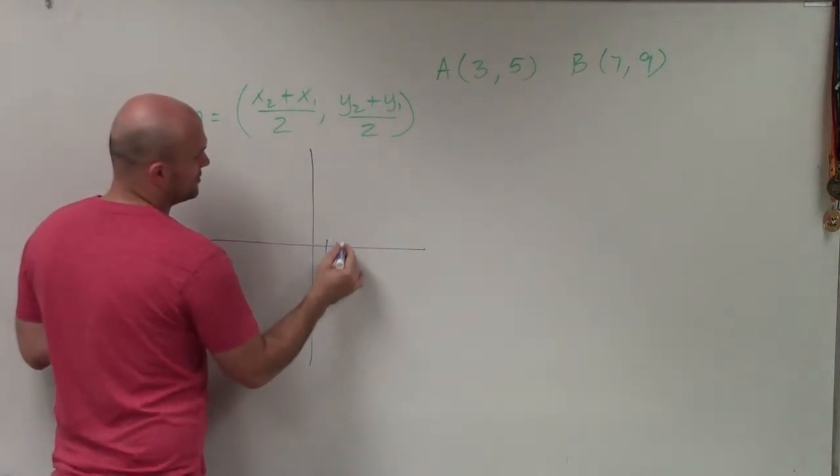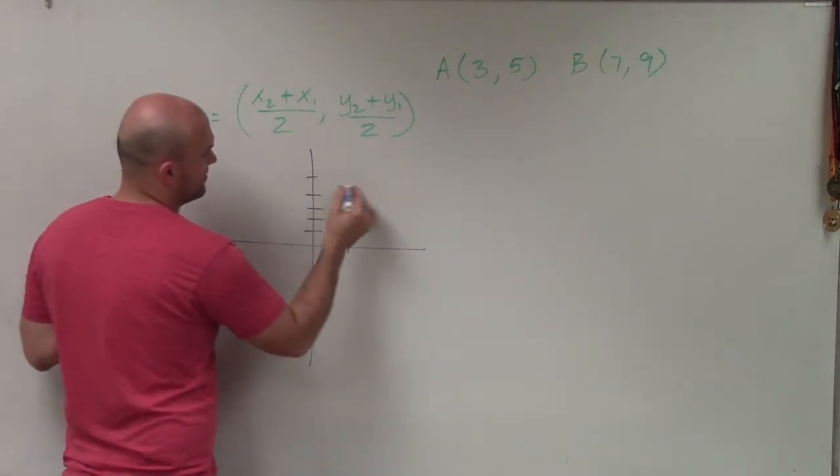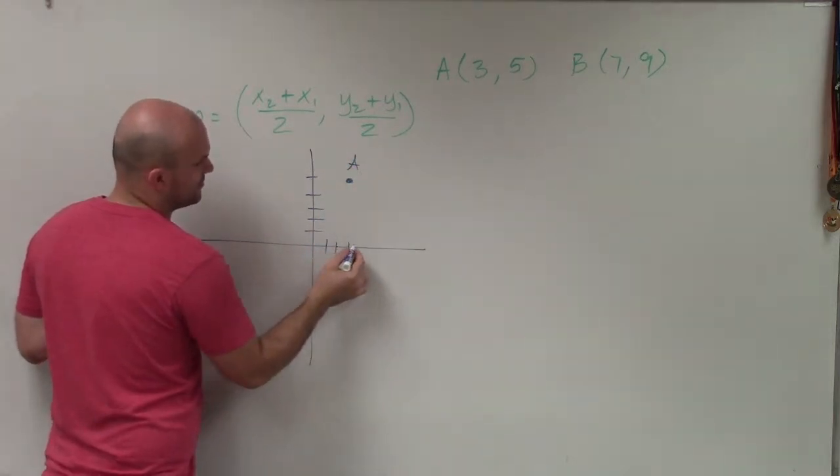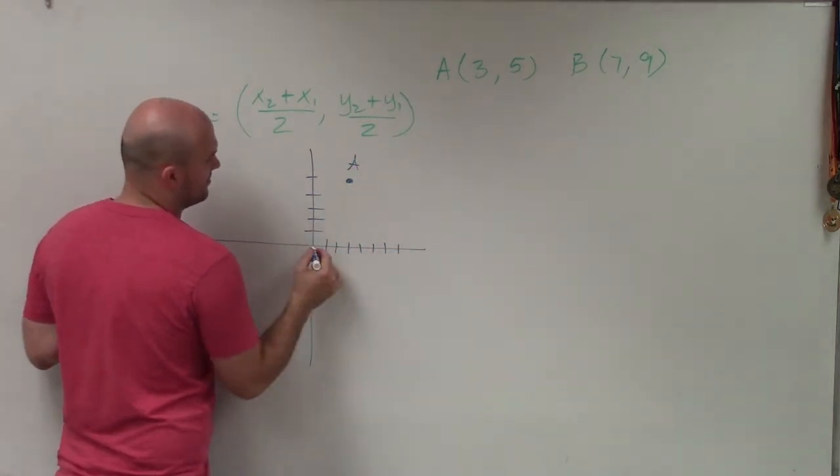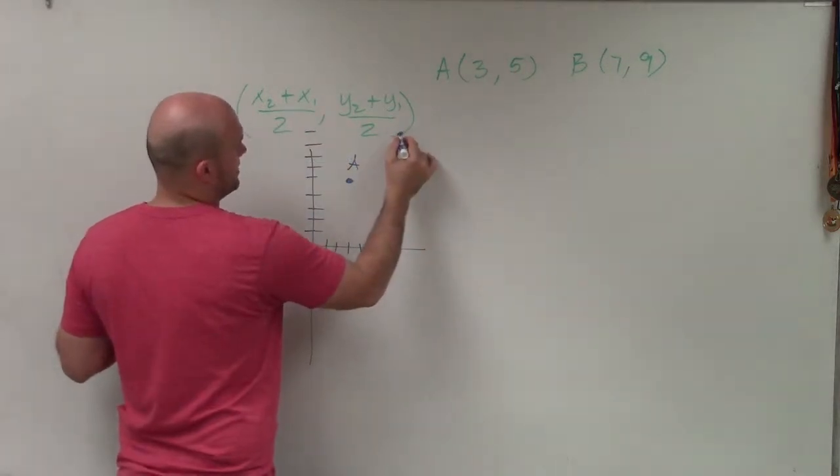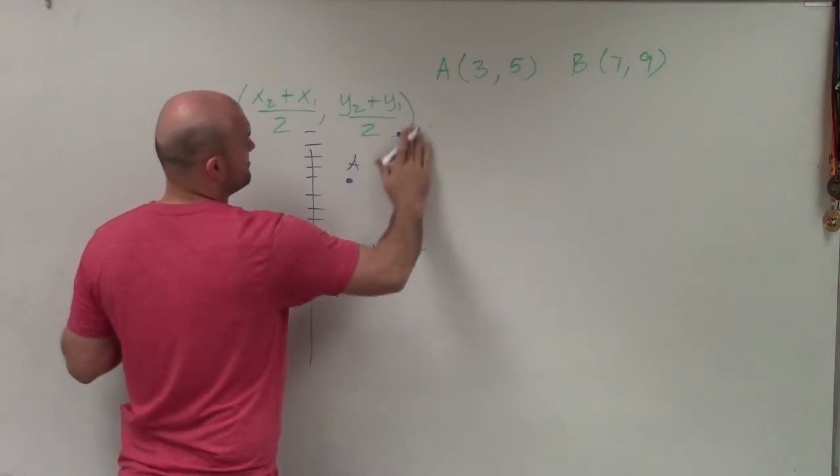So we have A, which is at 1, 2, 3, 1, 2, 3, 4, 5. A, and B is at 7, 9, 1, 2, 3, 4, 5, 6, 7. Up 9, 1, 2, 3, 4, 5, 6, 7, 8, 9. OK, so 7, 9. That's B.